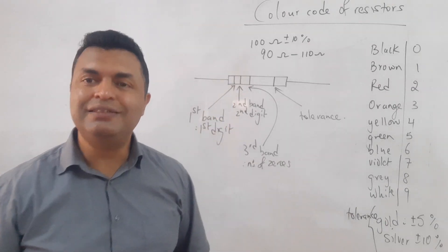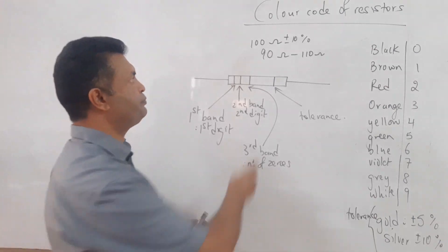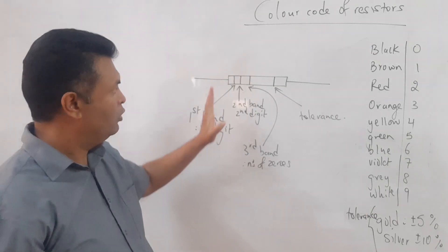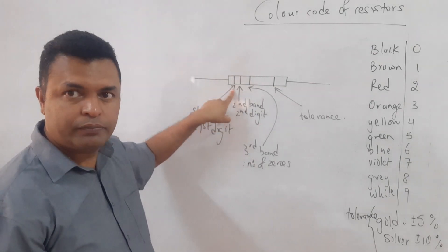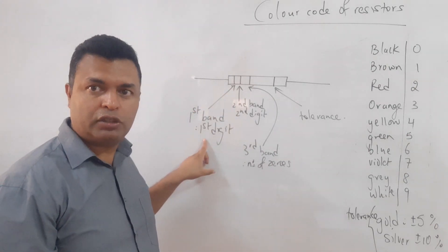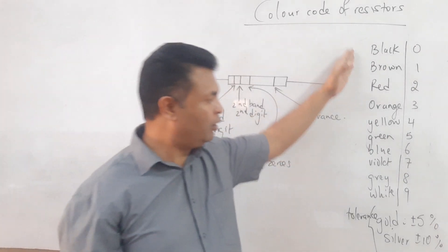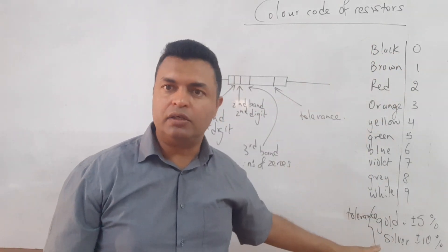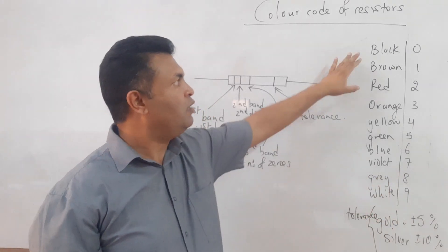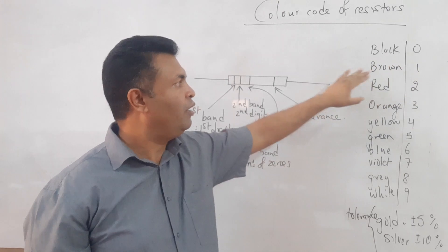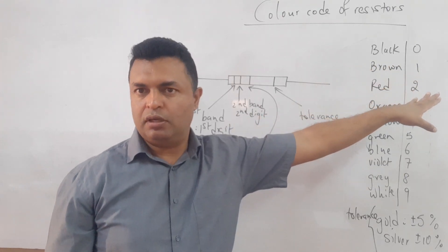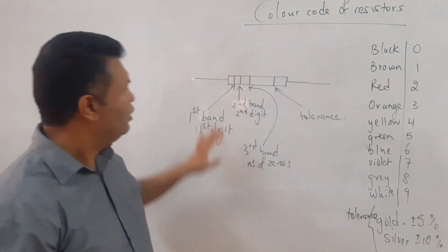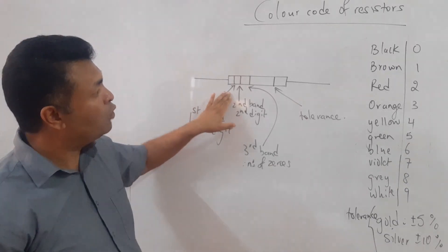Now let's look at how to read the color codes. The three bands close to each other are on the left. The first band gives the first digit, the second band gives the second digit. You have a table showing which color represents which value — black is zero, brown is one, red is two, orange is three, and so on.